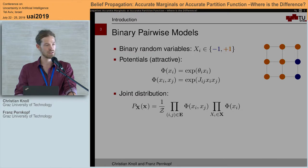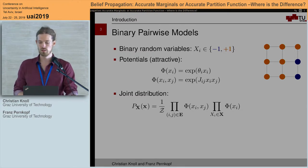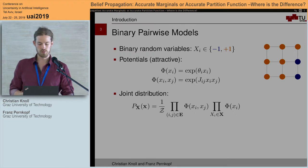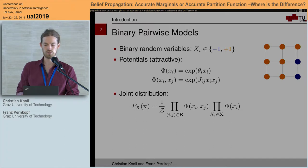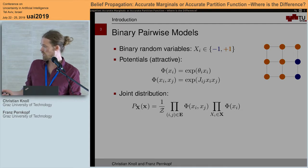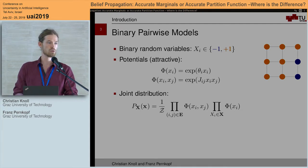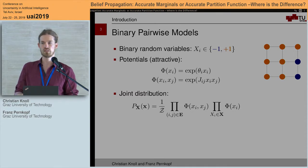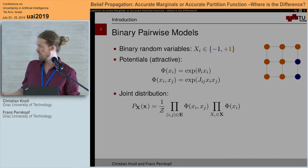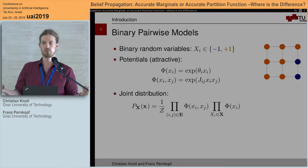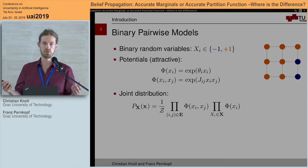Let's make the model more precise. We are considering binary pairwise models with binary random variables specified by exponential potentials — in particular local potentials and pairwise potentials. The local potentials specify which random variable favors which state, and the pairwise potentials define interactions between neighboring variables via a coupling strength J. When J is negative, two neighboring variables push each other into opposite states; when positive, they favor the same state.